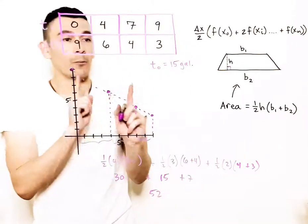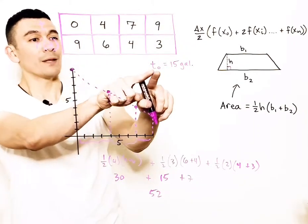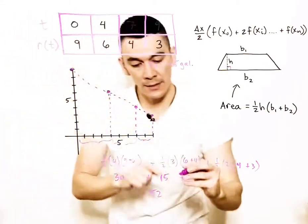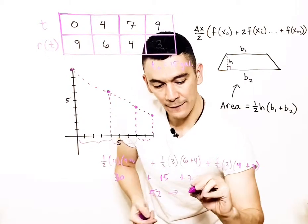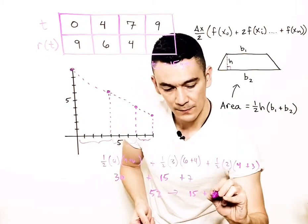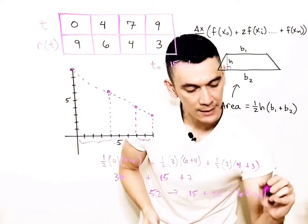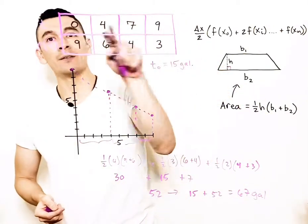However, recall that the initial gallon amount in the tank at t equals 0 is 15. So add 15 to this, and that gives you 67 gallons in the tank at the 9-minute mark.